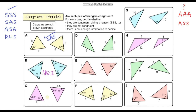For question C, we've got two angles that are the same, but the corresponding side lengths are different. Because the corresponding side lengths are different, these two triangles are definitely not congruent.